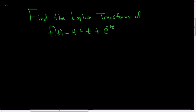Find the Laplace transform of f of t equals 4 plus t plus e to the negative 7t. In this problem we'll need a couple formulas.